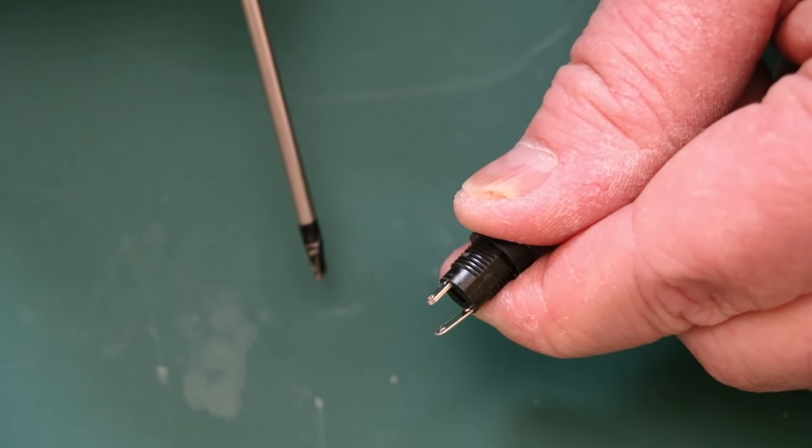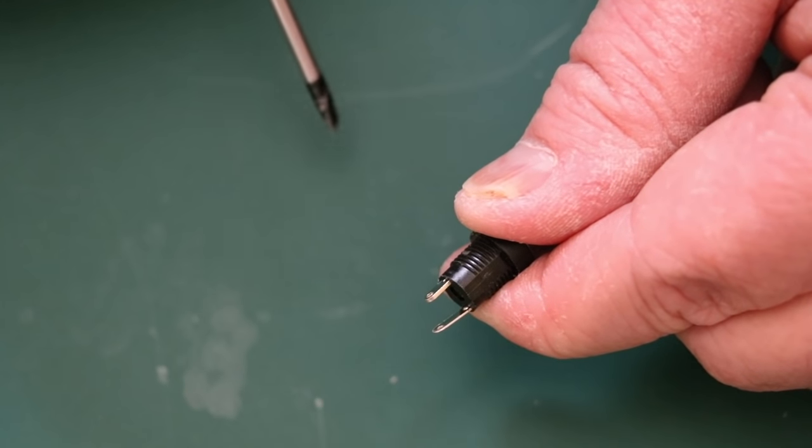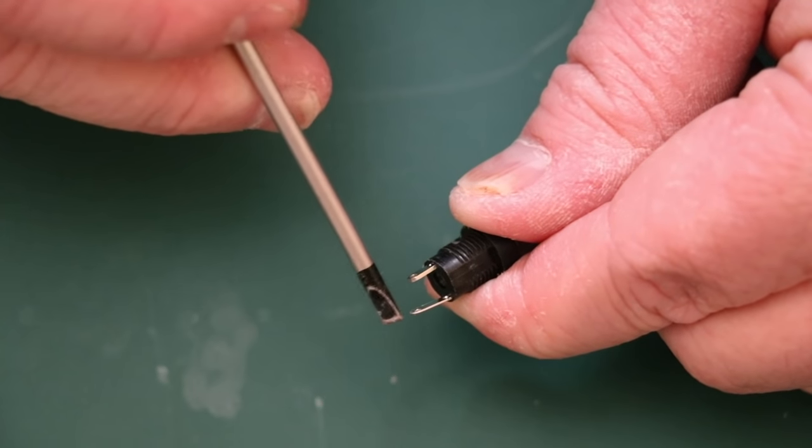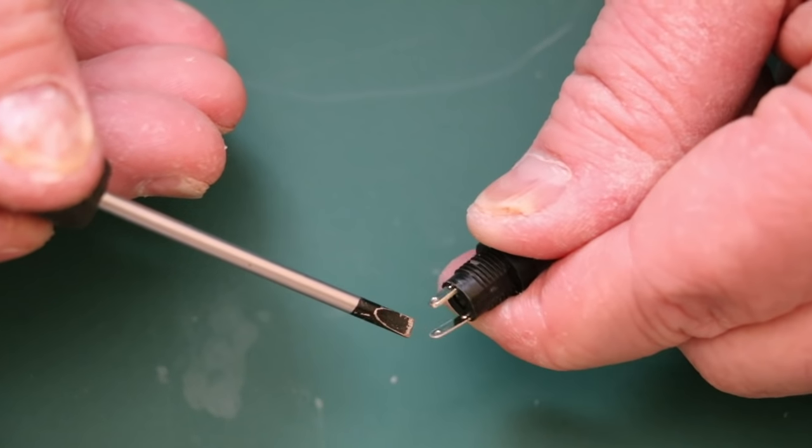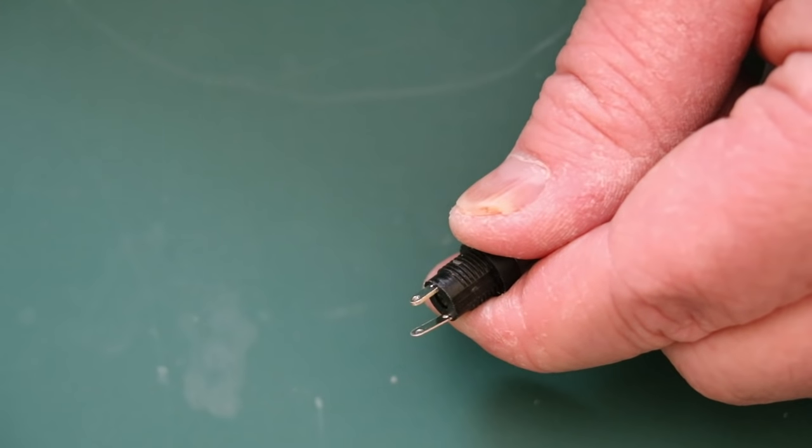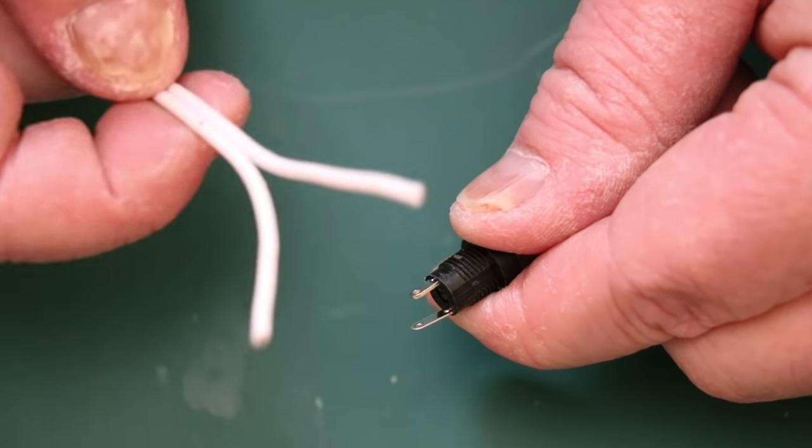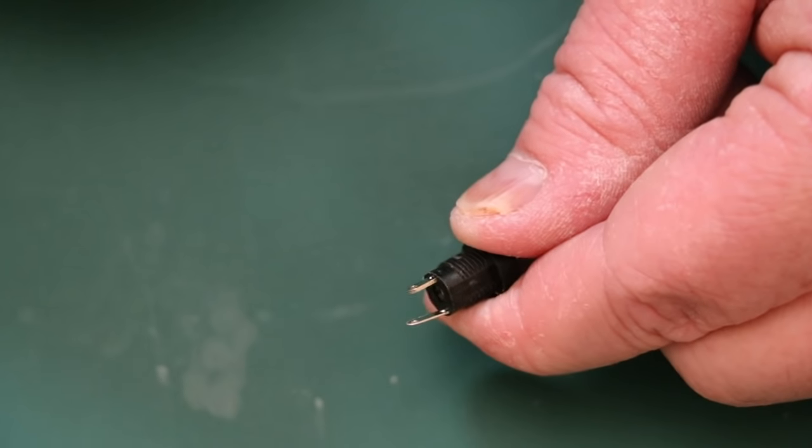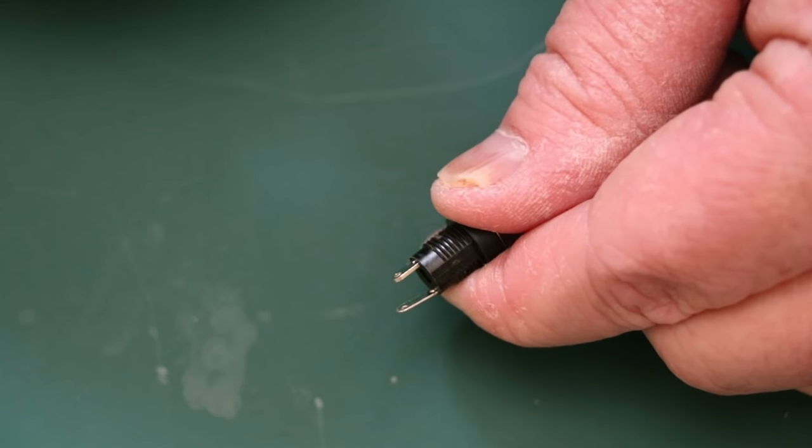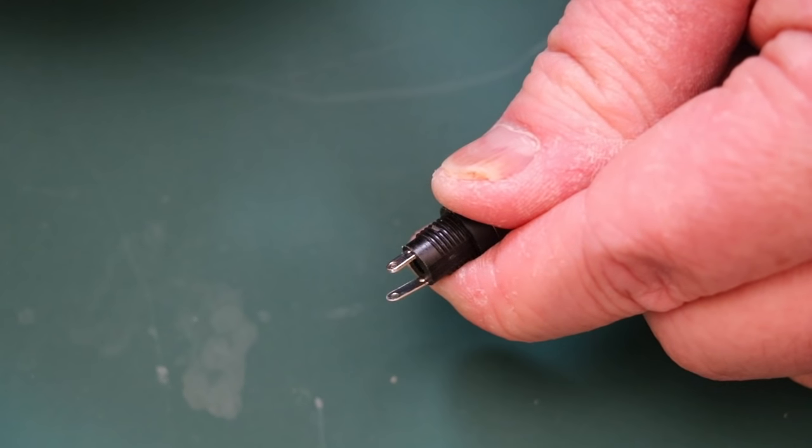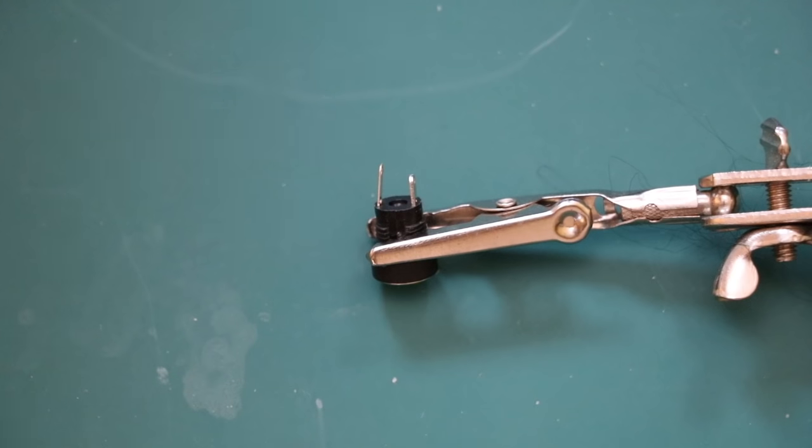When we solder our cables onto the connector you'll notice that the two terminals at the back of the socket - one is slightly larger than the other. The long terminal is always the negative and the short one is always the positive. We're going to tin the connections on the socket and the cable, then solder the cable onto the socket. I'm also going to put on some heat shrink to completely cover the terminals and make sure they're nice and protected.